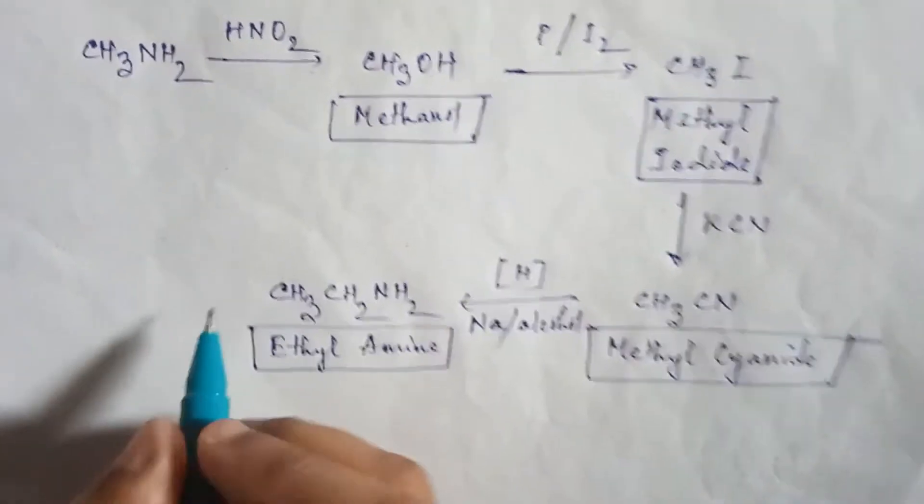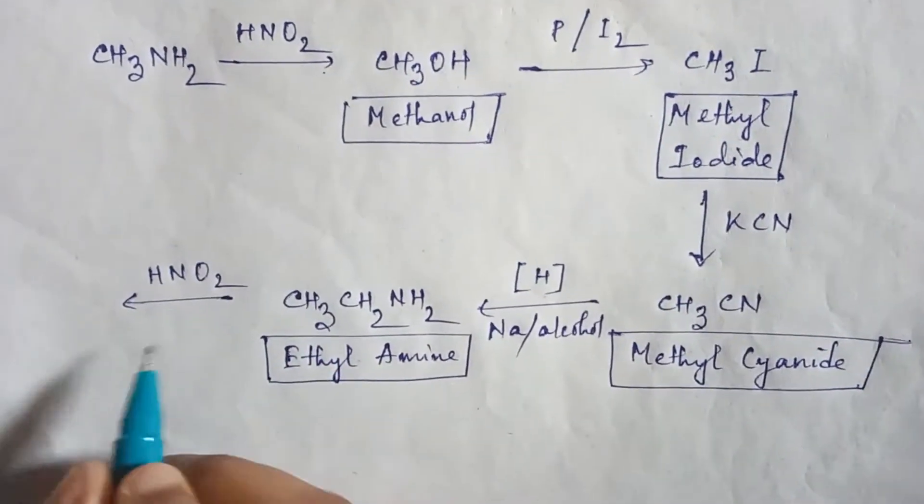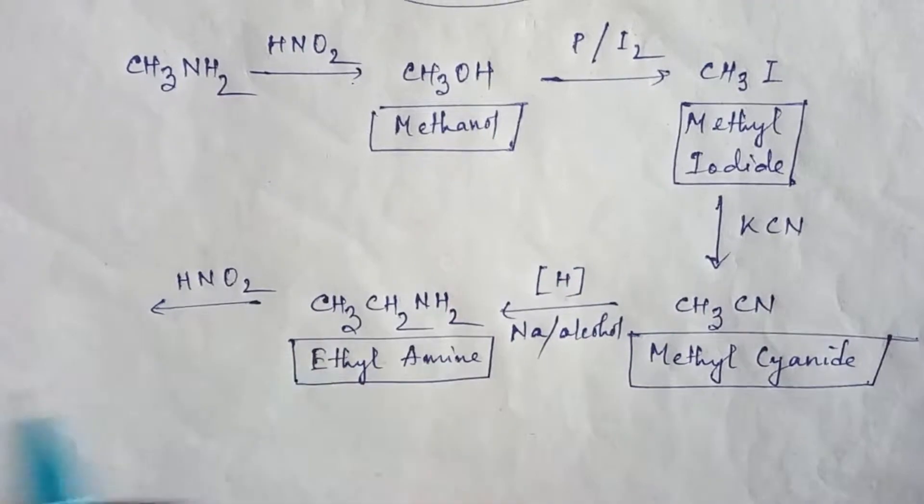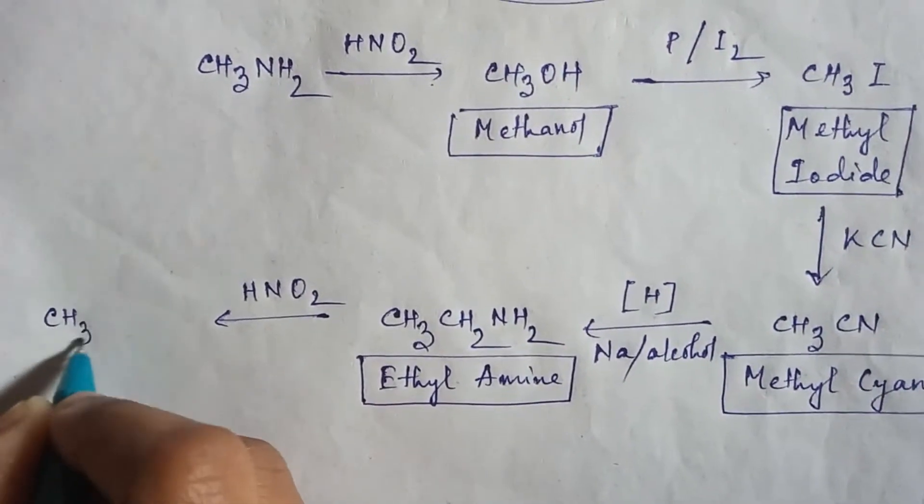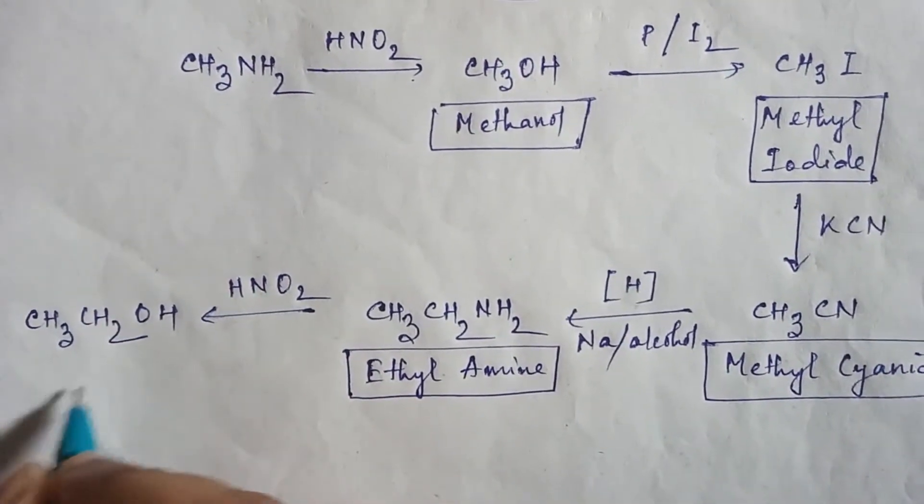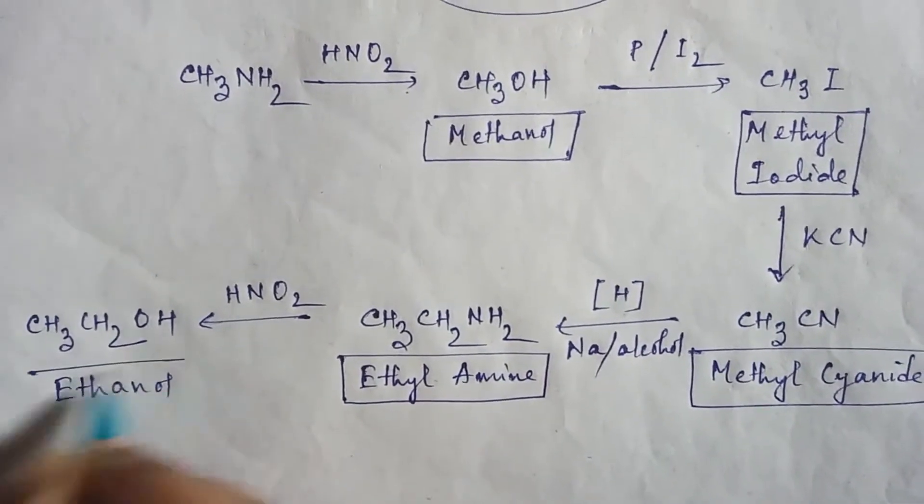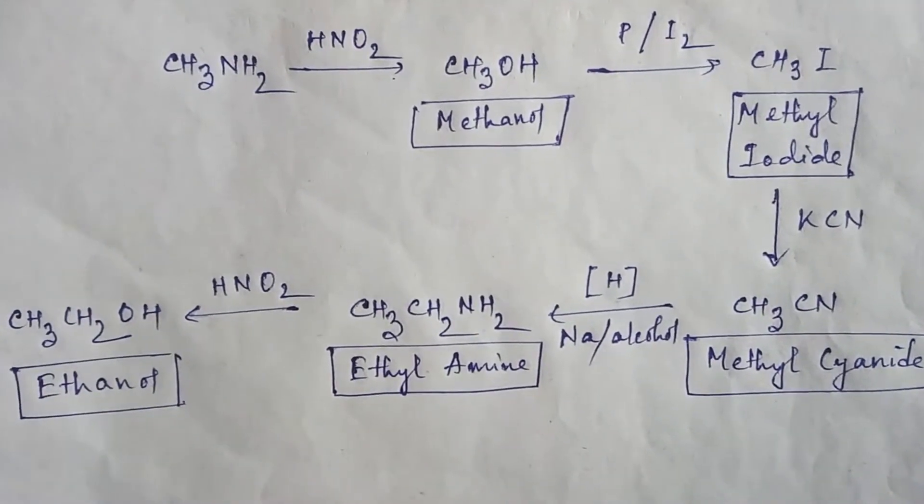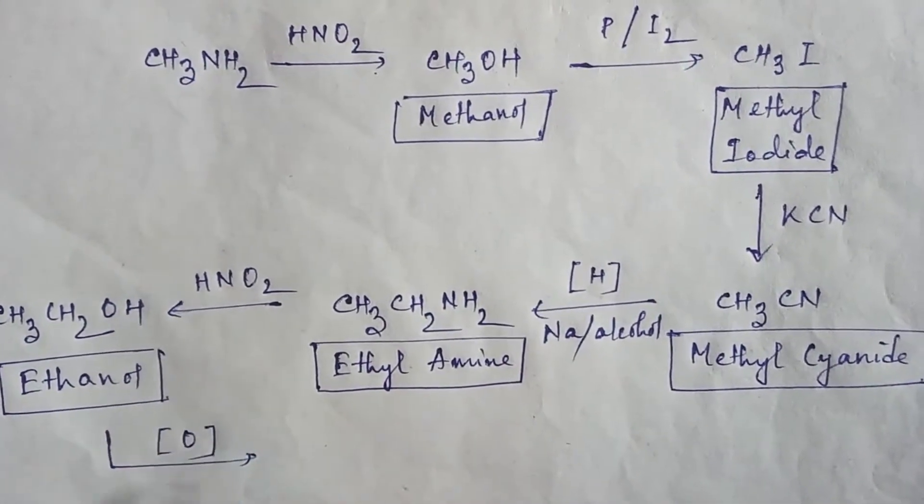Now if you use again nitrous acid in amine compound, then you will easily get alcohol compound. So CH3CH2OH, and we can say this one is ethanol. Then in ethanol if you do oxidation, then oxygen will include here.